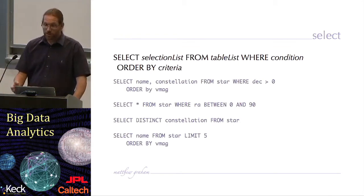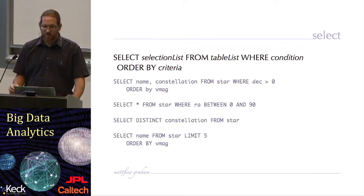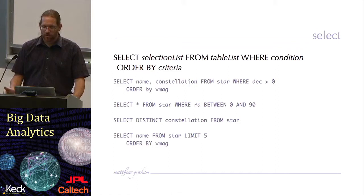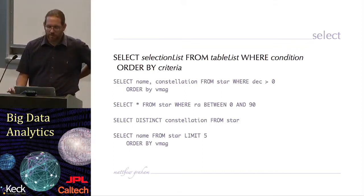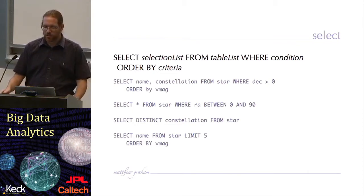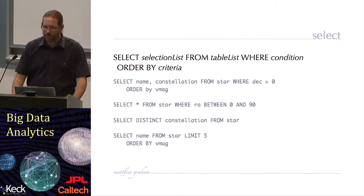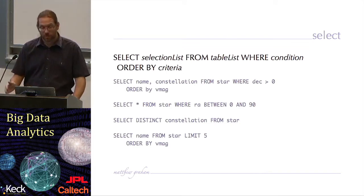If we want all the columns from a table, we can use the asterisk wildcard. That second statement will return all the data from the star table where the position variable RA has a value between 0 and 90. In those two where condition statements, you can see where we can put in logical constraints. Or if we want to do a range, we could say RA is greater than 0 and RA is less than 90, but there is the word between and that we can use in the where statement.